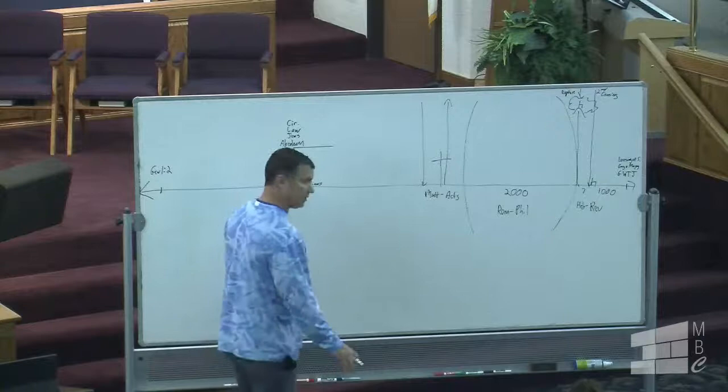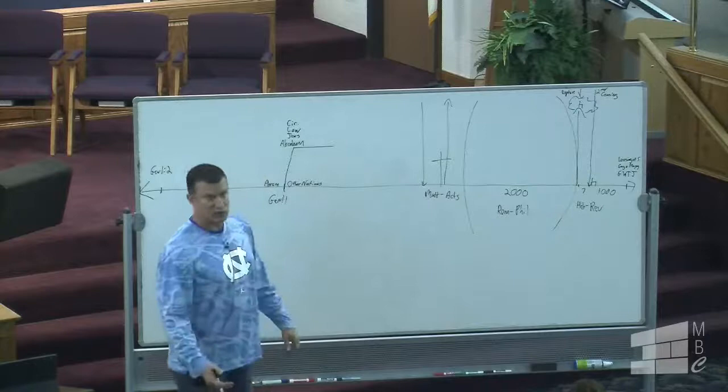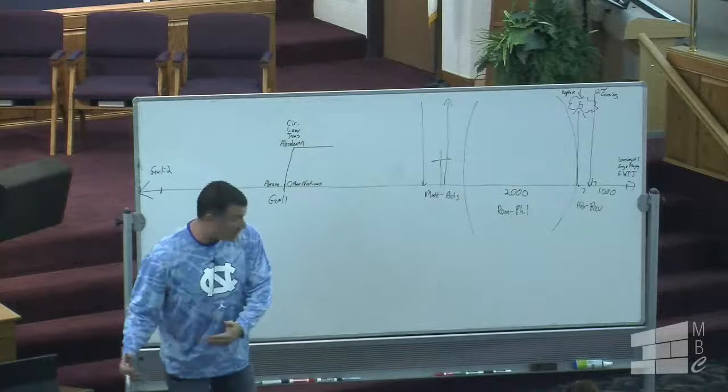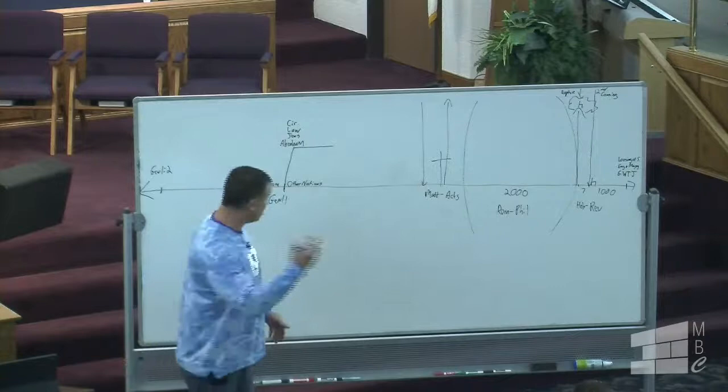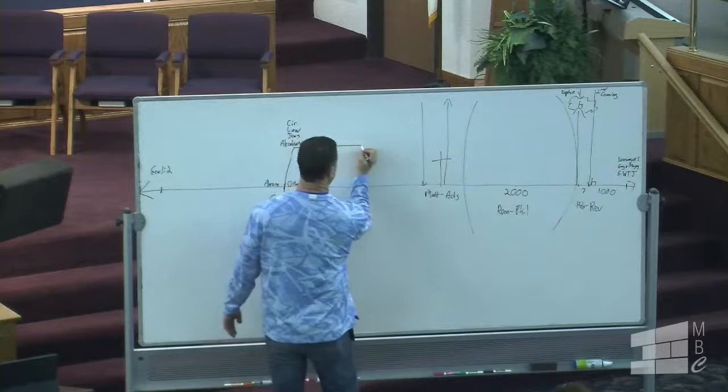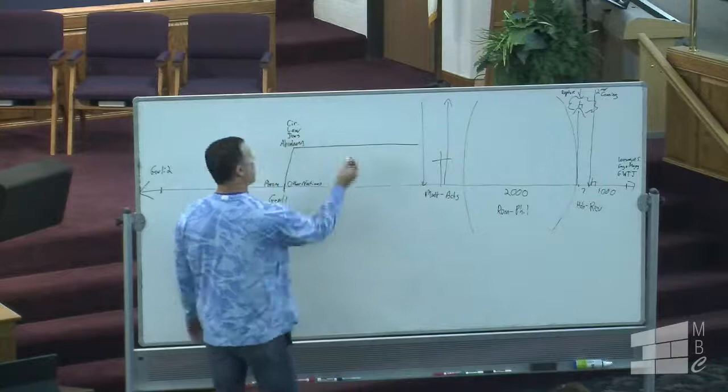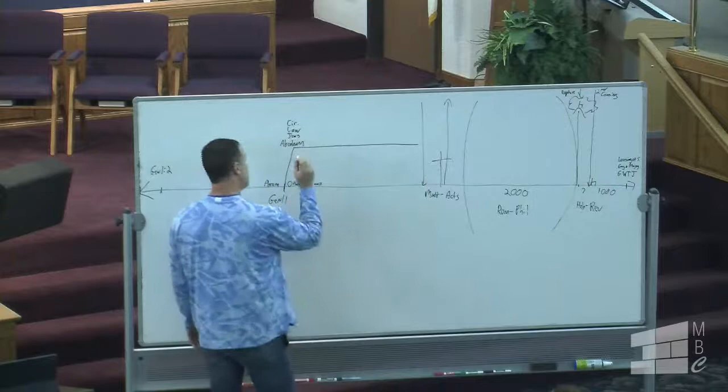The book of Judges is about Israel rebelling, getting in trouble, getting their butt kicked, calling out to God, and then him raising up a judge to deliver them — then they'd be okay for a while and start over again. So the line up here represents the nation of Israel, and down here are the other nations. God specifically elevated them as his chosen people, and the other nations would follow the law and get to God through them.